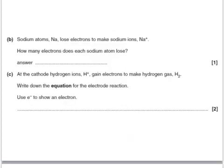Sodium atoms, Na, lose electrons to make sodium ions, Na⁺. How many electrons does each sodium atom lose? It loses one electron, because electrons are single negative charges — so if you've gone from Na to Na⁺, it must have lost one negative charge.